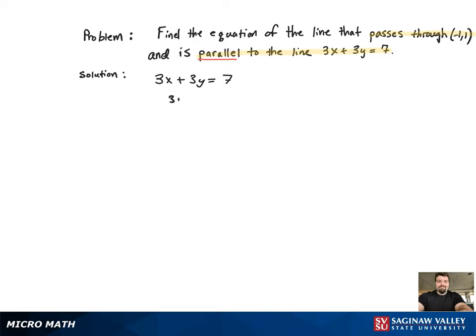So what we're going to do is find the slope of that line by first getting that equation into slope-intercept form. Now that it's in slope-intercept form, we can see that the slope is negative 1.